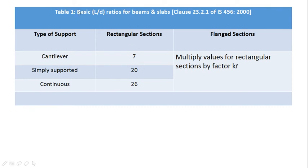This is table 1: basic L/D ratio for beams and slabs as per clause 23.2.1 of IS 456-2000, for cantilever, simply supported and continuous. For rectangular section, for cantilever the L/D ratio is 7; for simply supported the L/D ratio is 20; whereas for continuous structure it is 26.